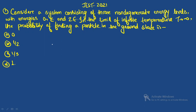The first question: consider a system consisting of three non-degenerate energy levels with energies 0, ε, and 2ε. In the limit of infinite temperature (T→∞), the probability of finding a particle in the ground state is what? You are having three non-degenerate energy levels with energies 0, ε, and 2ε, and you need to find the probability at T→∞.